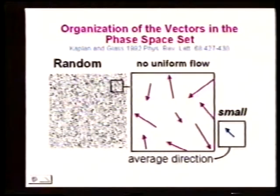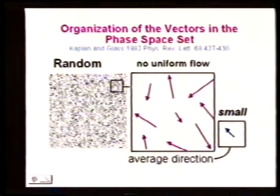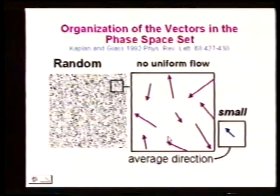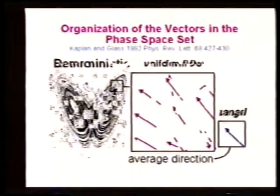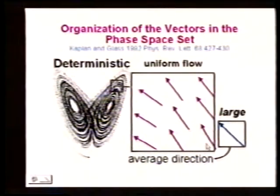This is called a coarse graining, because we don't want to go down to infinitely small where there are no data points at all. We want it to be coarse enough to see some data, but not so coarse that it's too big. And this issue of coarse graining occurs in many problems in chaos—it's actually been a difficult one to handle in terms of entropy. So for this non-chaotic phase space, the average direction is small or not in any particular direction, whereas for the Lorentz attractor, the average will be large. So this is one way of trying to differentiate randomness from chaos.